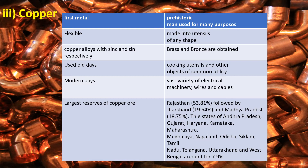Copper is used to make brass and bronze for cooking utensils. It is used in electric wires and cables. The largest reserves of copper in India are in Rajasthan.